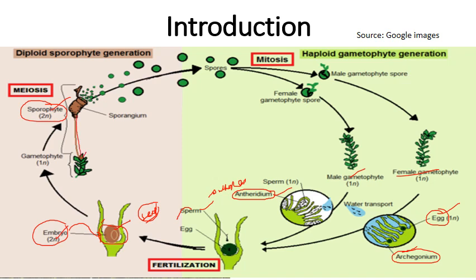The sporophyte is a semi-parasitic or parasitic structure dependent on the gametophyte for nutrition and support. Inside the sporophyte, haploid spores are produced through meiosis. After dispersal, spores settle on a suitable substratum and germinate to produce an intermediate structure called protonema, which then grows into the full-fledged gametophyte. The life cycle is a heteromorphic or heterologous type of alternation of generations.